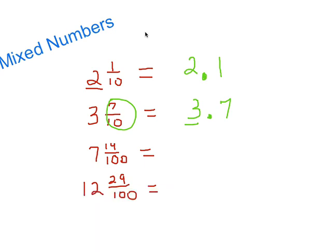Let's go to the third mixed number. We have seven and fourteen-hundredths. We have a denominator of one hundred, so I'm going to put the seven as my whole number, then a decimal, then fourteen in the hundredths place. I know that four is in the hundredths place — so seven and fourteen-hundredths, making sure that last digit lands in the hundredths place.